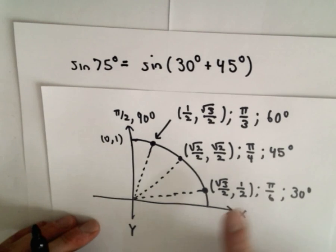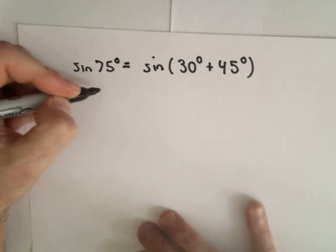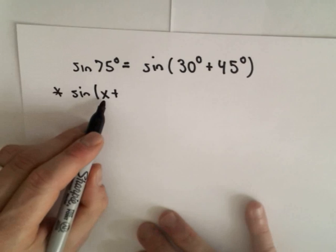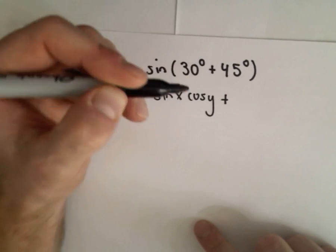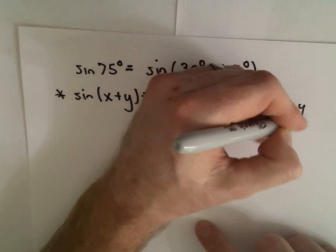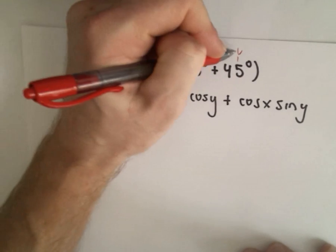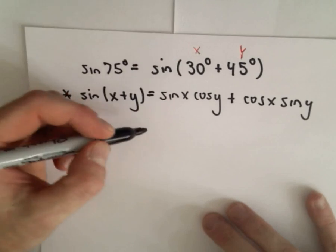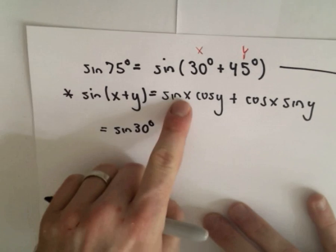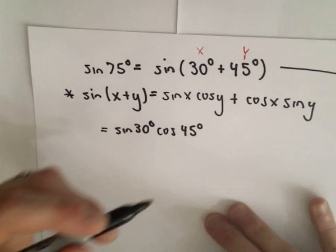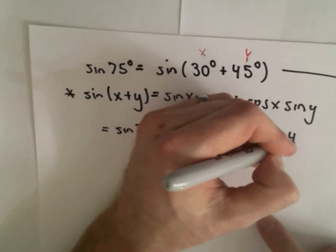We have to make sure we know our identity. The identity says that sine of x plus y equals sine of x multiplied by cosine of y, plus cosine of x times sine of y. In this case, 30 degrees is going to be my x value and 45 degrees is going to be my y value. So we can write this as sine of 30 degrees times cosine of 45 degrees, plus cosine of 30 degrees multiplied by sine of 45 degrees.